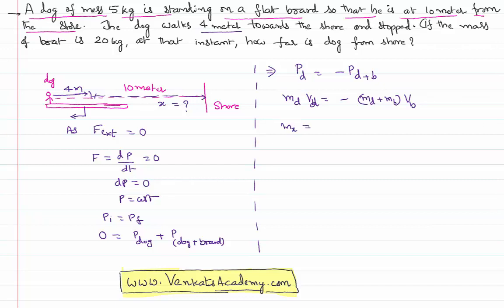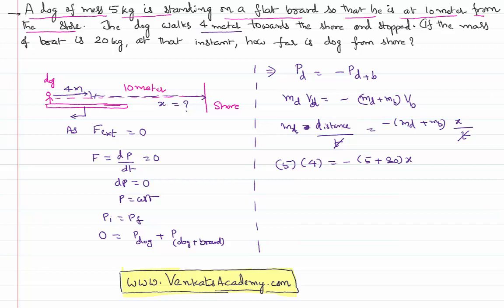We can write mass of the dog times distance traveled by the dog in a given time equals minus (mass of the dog plus mass of the boat) times distance traveled by the boat backward in the same time — the time cancels. Mass of the dog is 5 kg, distance traveled by the dog is 4 meters, mass of the boat is 20 kg, and the backward distance is x. So 5×4 = −(5+20)×x, giving 20 = −25x, so x = −20/25 = −0.8 meter.